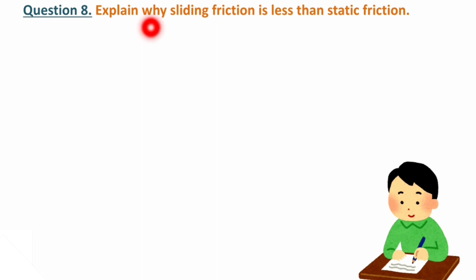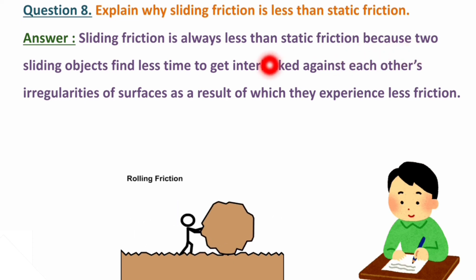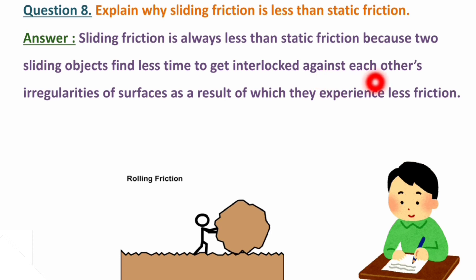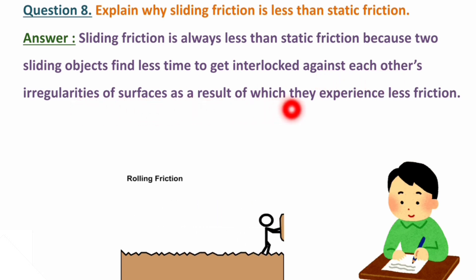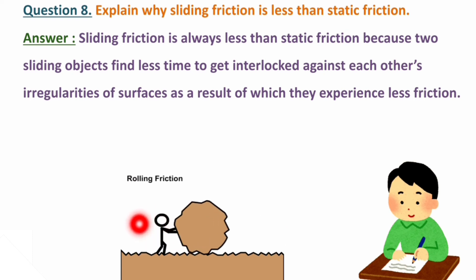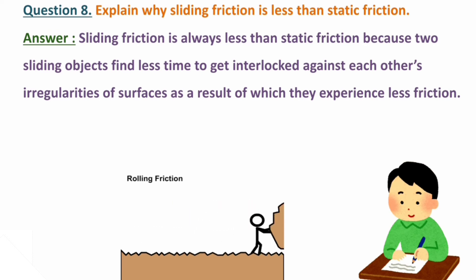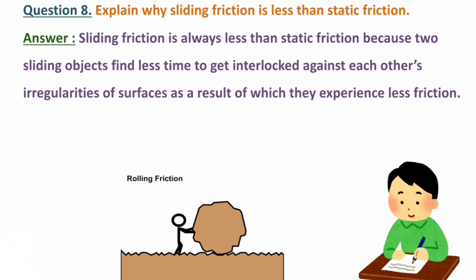Next question: explain why sliding friction is less than static friction. Humain explain karna hai ki sliding friction jo hai na, woh static friction se kam kyu hota hai. Answer: sliding friction is always less than static friction because two sliding objects find less time to get interlocked against each other due to the irregularities of the surface. Jo bhi object slide kar raha hai, usko sufficient time nae milta interlocking ka. Kyunki koi bhi do surfaces hongi, woh kitni bhi smooth dikhengi, unke andar bhi irregularities hoti hain. But agar koi object static hai, steady hai, toh woh interlocked hoga, so wahan pe force of friction zyada hota hai.